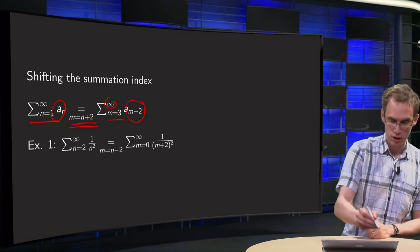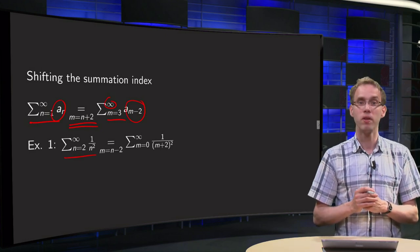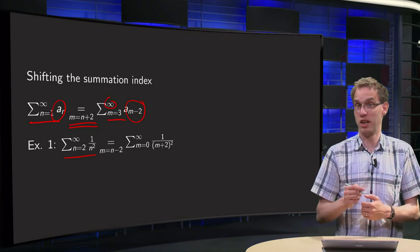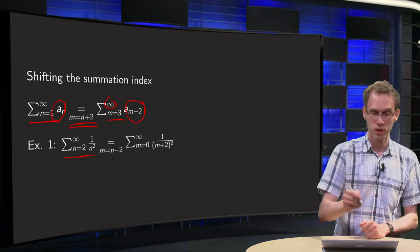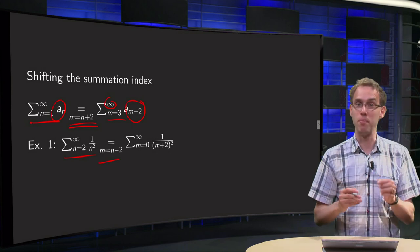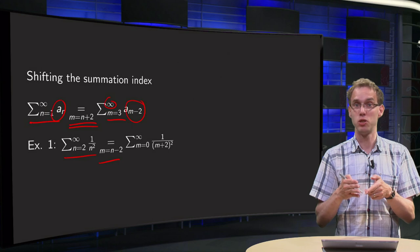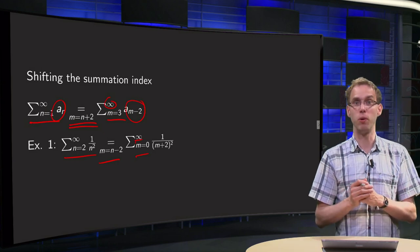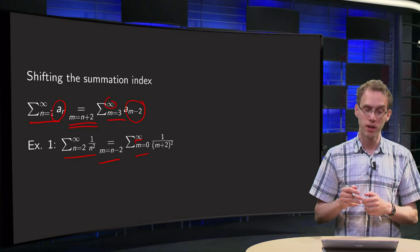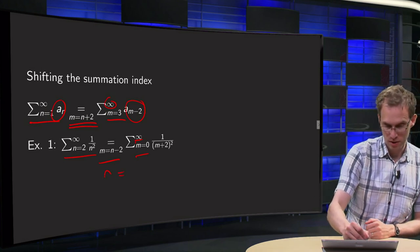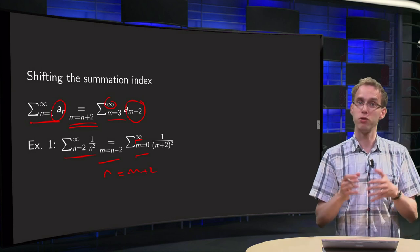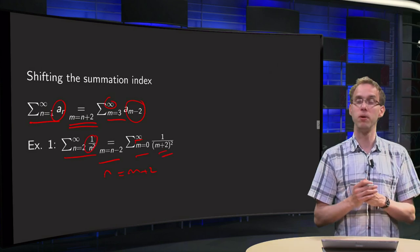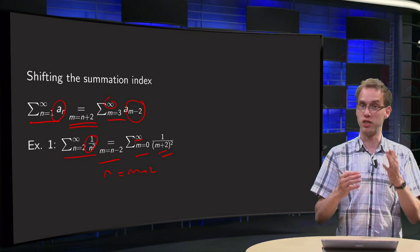Suppose we have to start at n equals 2 and we sum up to infinity of 1 over n squared. How can we start at 0? If we want to start at 0 instead of 2, we have to find a new summation index m equals n minus 2. If n starts at 2, then m equals n minus 2 starts at 0, still running up to infinity. Then we adjust 1 over n squared accordingly: n equals m plus 2, so we substitute that in to get our new series elements. And then our series starts at 0 instead of at 2.